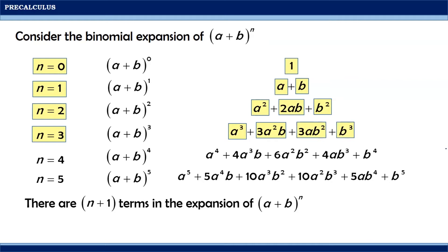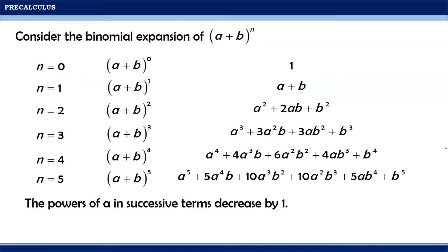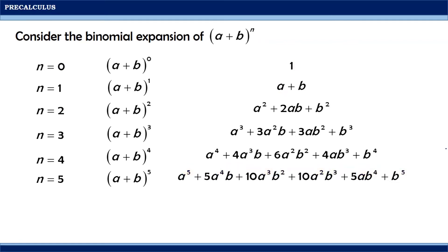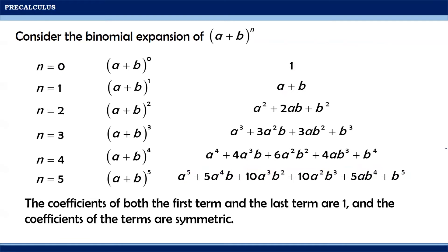Also notice that the powers of a in successive terms decrease by 1. For n equals 5, the powers of a are 5, 4, 3, 2, 1, and 0 for the last term. And the powers of b in successive terms increase by 1 — the exponents of b are 0, 1, 2, 3, 4, and 5. Furthermore, the coefficients of both the first term and the last term are 1.